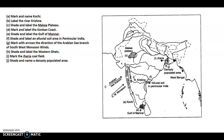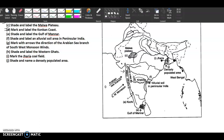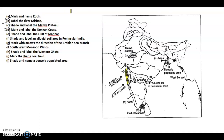Mark and name Kochi — it is somewhere here. River Krishna — this is River Krishna. Shade and label the Malwa Plateau — this is Malwa Plateau. Then Konkan Coast — it is here, this part. Shade and label an alluvial soil area in peninsular India — this is the part.